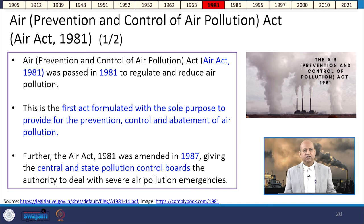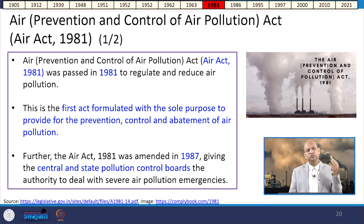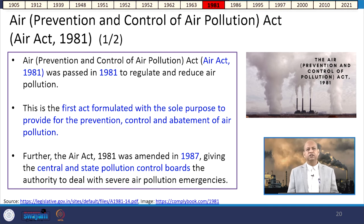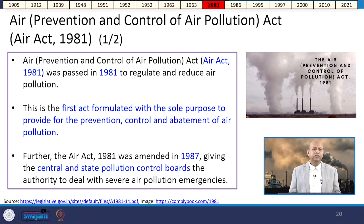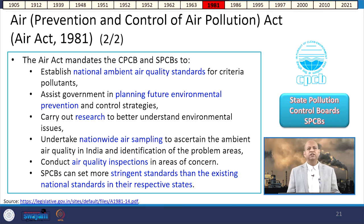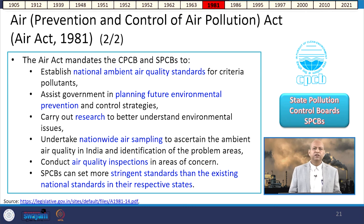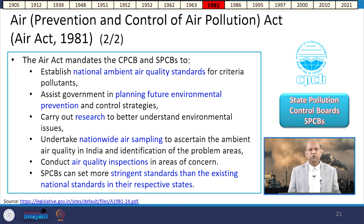Then came the very important Air Prevention and Control of Air Pollution Act — simply the Air Act — enacted in 1981. This was the first act exclusively and solely focused on air pollution, for the prevention, control, and abatement of air pollution to improve air quality. In 1987, it was amended, giving the Central and State Pollution Control Boards the authority to deal with severe air pollution-related emergencies. The amendment mandated the CPCB and SPCBs to establish national ambient air quality standards for criteria pollutants.